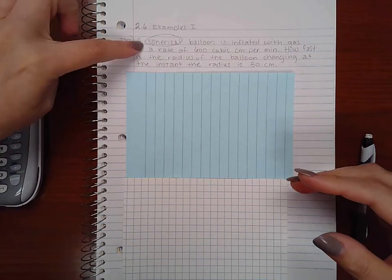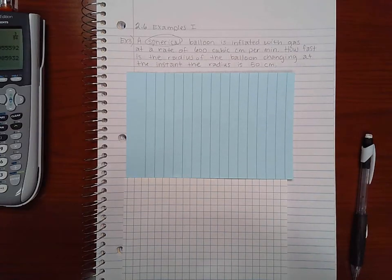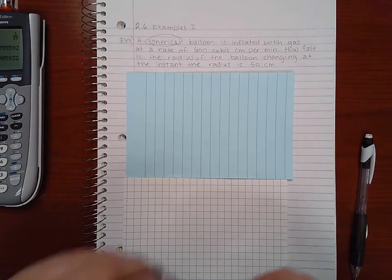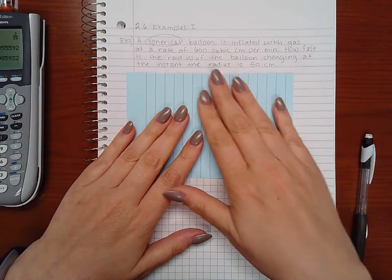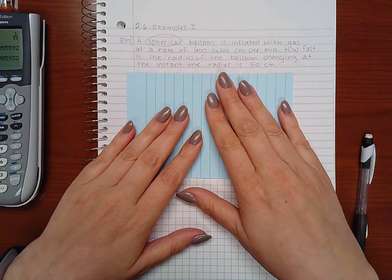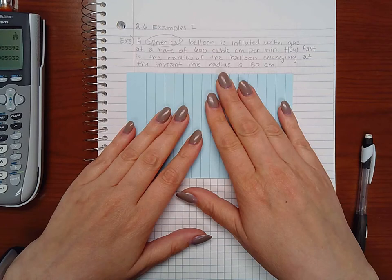That's why you might see notations like especially this spherical part circled here. So it says a spherical balloon is inflated with gas at a rate of 600 cubic centimeters per minute. How fast is the radius of the balloon changing at the instant the radius is 50 centimeters?